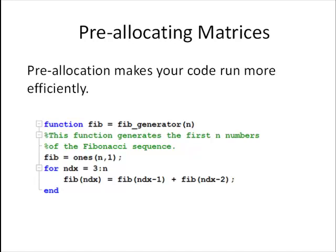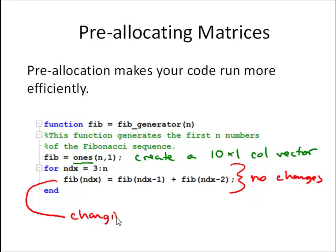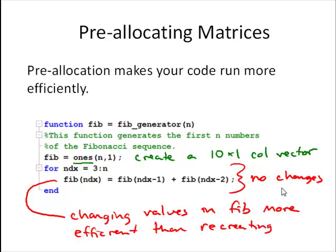So let's see how we could change this function so that we use pre-allocation to make it a little more efficiently. So the thing to do here, in this case, it was really easy because we know the first two values are equal to 1. So we'll just use ones and we'll create a column vector. We're going to create here a 10 by 1 column vector. And then all we're doing is now we go through, the rest of the code is exactly the same. No changes here. But instead of creating a new vector every time, this command here just changes, now we're just changing the values in Fib is much more efficient than recreating a different sized Fib or different sized vector each pass through the loop.